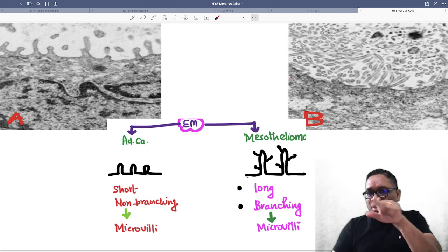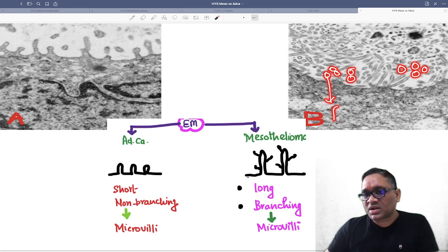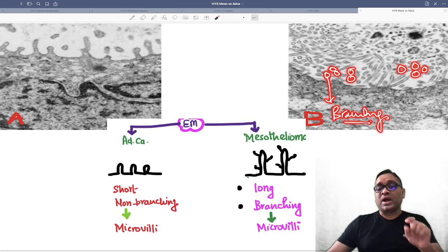You are going to see the branches as round tips. All these round tips which we are seeing are branching of the microvilli. That is how you identify branching of the microvilli in mesothelioma.